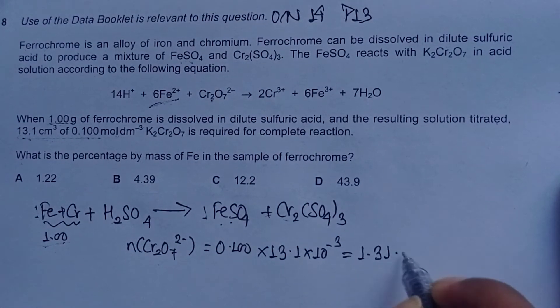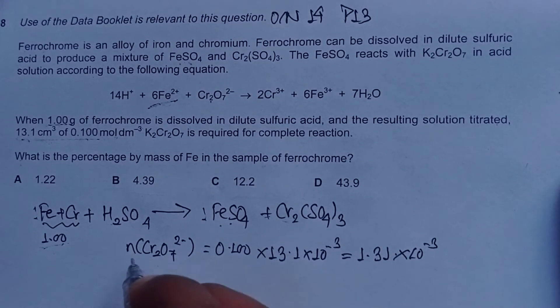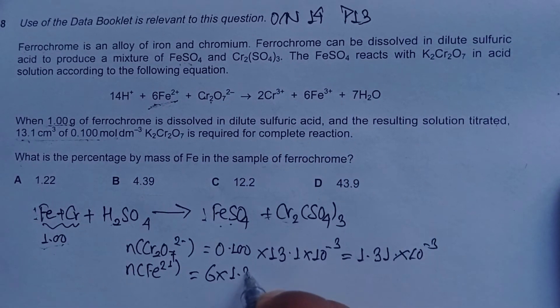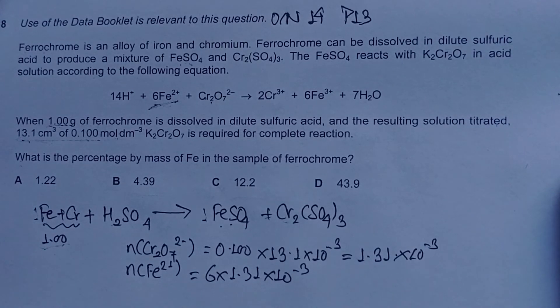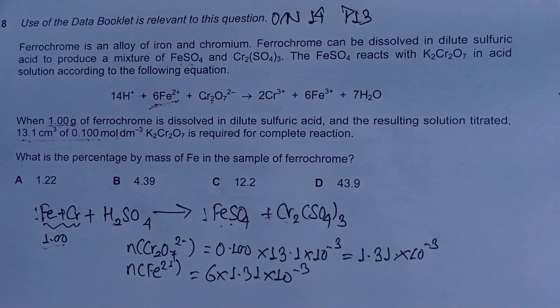Moles of Fe²⁺, according to this ratio, is 6 multiplied by 1.31 × 10⁻³. Using the calculator, this gives us 7.86 × 10⁻³.